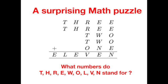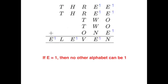Today, we are going to look at a surprising math puzzle. What you see on the screen now is a cryptogram, a math puzzle where each alphabet represents a different number. As an example, if we designate E to be 1, then no other alphabet on the cryptogram can be 1.